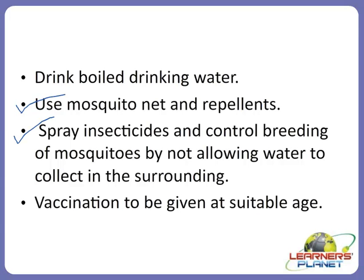Insecticides should be used properly for controlling the breeding of mosquitoes. In case you observe collected water in the surrounding — normally in summers or after the summer season, some water is collected in coolers or surrounding regions — this should be sprayed with insecticides. Insecticides are chemical substances which can inhibit the growth of insects or kill them. Use of such insecticides will not allow mosquitoes to grow, and thus we can remove the vectors from the surrounding.